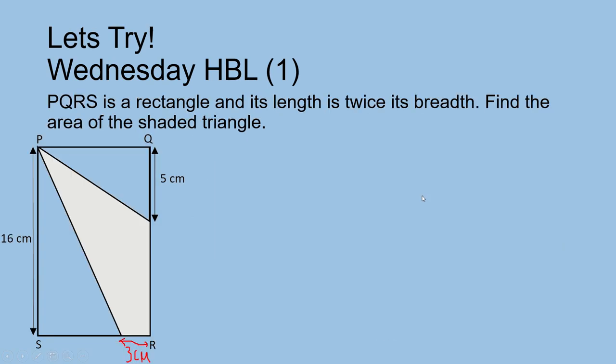This is the trick question. PQRS is a rectangle and length is twice its breadth. Find the area of the shaded triangle, just this part. The breadth is 8. Now we know there is 3 cm given, I just forgot to put it there, and here is 5 cm.